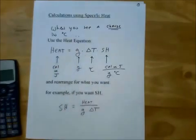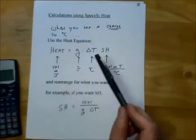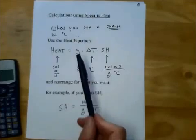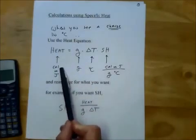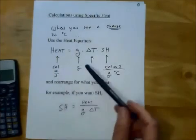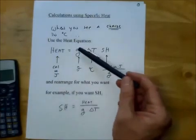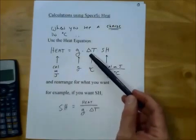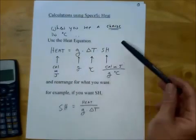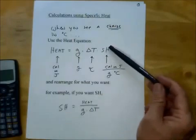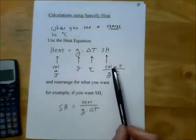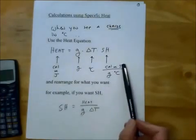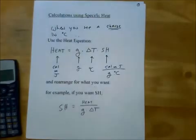This is your master equation, and you can always rearrange it to what you want. The heat equation is: heat can be either calories or joules, and you've got grams, delta T — delta means the change in temperature in degrees Celsius — and the specific heat, which is calories per gram degrees Celsius, or joules per gram degrees Celsius.